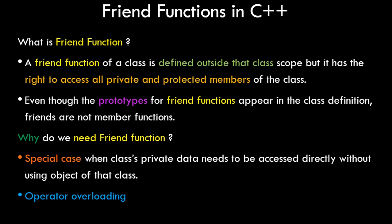Let's first go through a little bit of theory on friend functions. We've covered quite a few concepts on object-oriented programming, and we already know that in OOP the data is secured privately inside the class. Only the member functions of that class can access that data — outside functions cannot access the private data members of a class. But there might be situations where outside functions need to access private data, and in those scenarios friend functions come into picture.